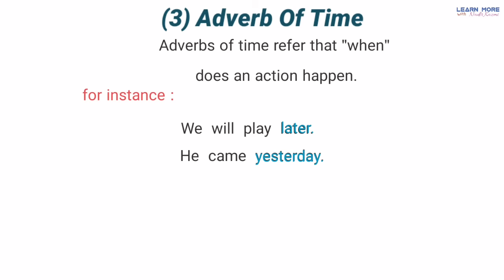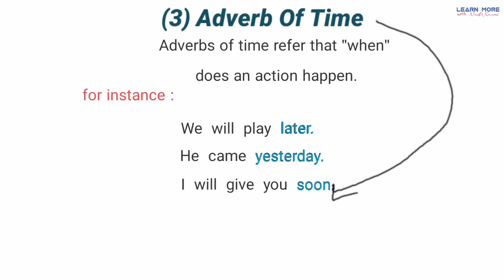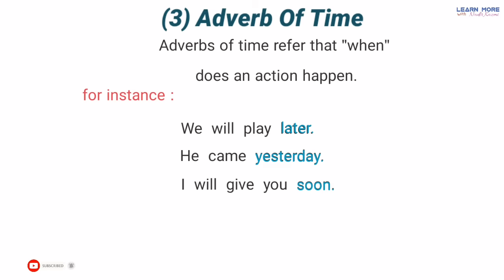'When will you give me my mobile?' — aap mera mobile mujhe kab denge? 'I will give you soon' — main aap ko jald hi dunga. Ab jo word 'soon' hai yeh adverb of time hai kyunke yeh uske kaam ke baare mein bata raha hai, uske waqt ke baare mein — ke woh kab denge? Soon, jaldi.